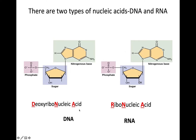In DNA, the name is deoxyribonucleic acid, and in RNA it is ribonucleic acid. Both of them are nucleic acids, but the sugar in RNA is ribose, while in DNA it's deoxyribose. The underlined letters in those sugar names form the basis of the names of these two different nucleic acids.